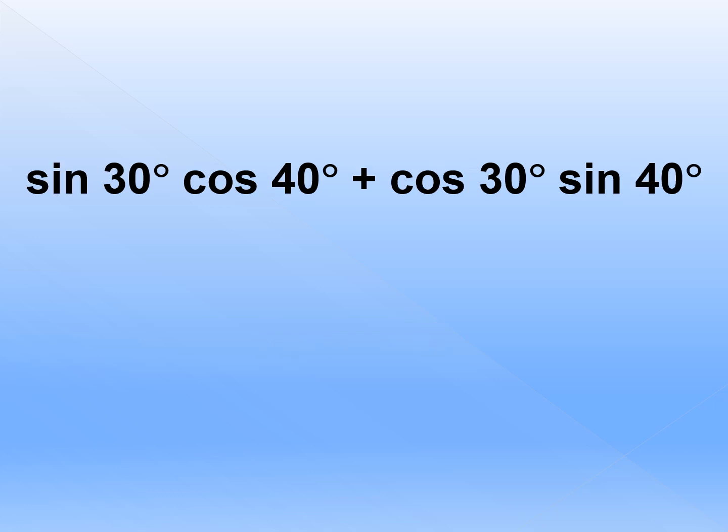Let's try another example: sin30·cos40 plus cos30·sin40. Since it follows the pattern sin, cos, cos, sin, we're going to have sine. Since the operation on the middle term is plus and we're dealing with sine, we're going to add a and b. Our a is 30 and our b is 40. 30 plus 40 is 70. Therefore, we have sine70 degrees.